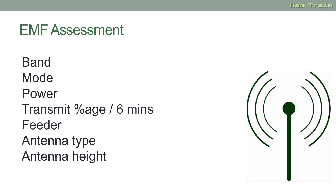To perform the calculations you need some basic information: the band you're transmitting on; the mode — whether that's a data mode, AM, FM, or SSB; the power you'll be putting into your antenna; and the percentage of time you'll be transmitting over six minutes. For instance, if you spend 50% of your time transmitting and 50% listening, your transmit percentage over six minutes would be 50%.